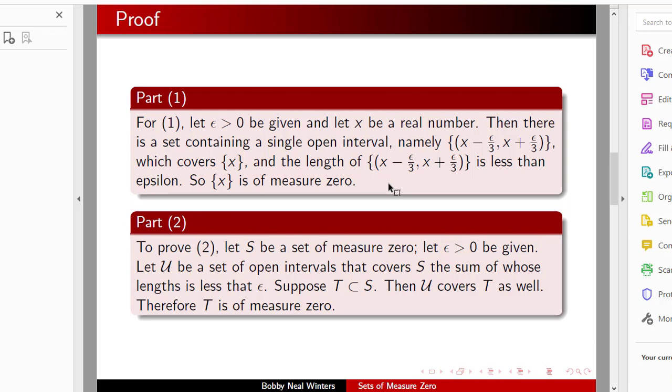To prove two, let s be a set of measure zero, let epsilon greater than zero be given, and let script U be a set of open intervals that covers s, the sum of whose length is less than epsilon. Now, suppose that t is contained in s, then the set that covered s will cover t as well, and so t will be of measure zero.